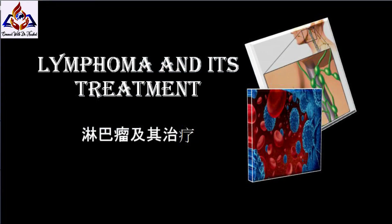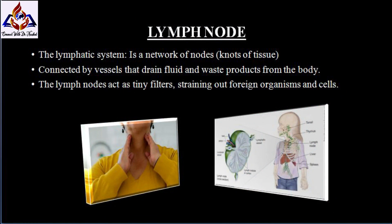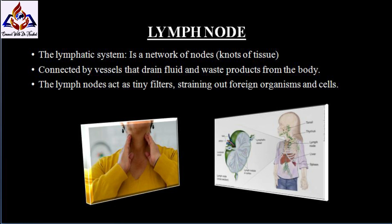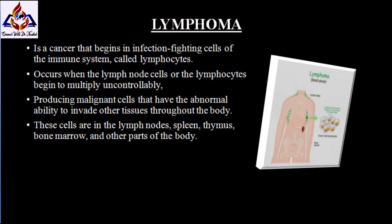Our topic is lymphoma. The lymphatic system is a network of nodes connected by vessels that drain fluid and waste products from the body. The lymph nodes act as tiny filters, straining out foreign organisms and cells. Lymphoma is cancer that begins in infection-fighting cells of the immune system called lymphocytes. Lymphoma occurs when lymph node cells or lymphocytes begin to multiply uncontrollably, producing malignant cells that have the abnormal ability to invade other tissues throughout the body. These cells are found in the lymph nodes, spleen, thymus, bone marrow, and other parts of the body.